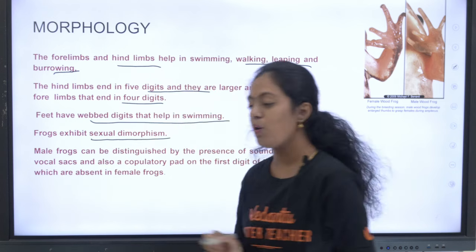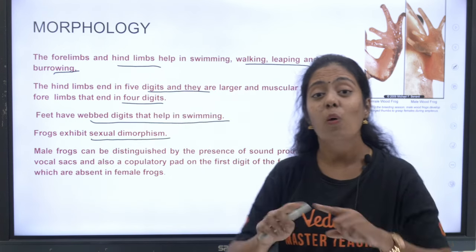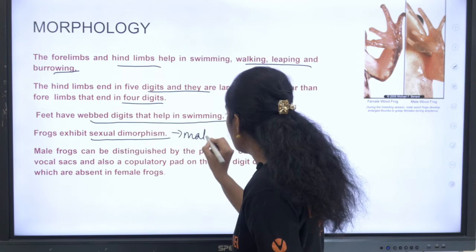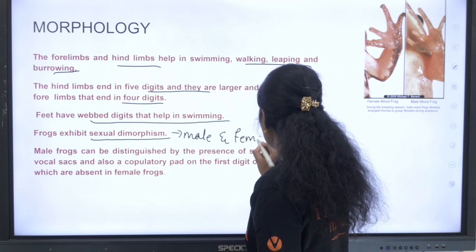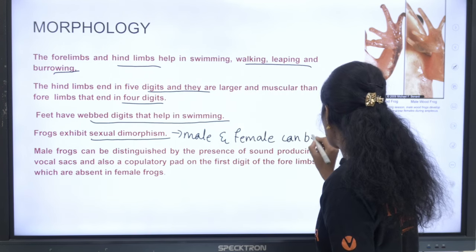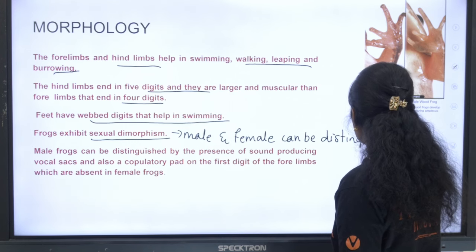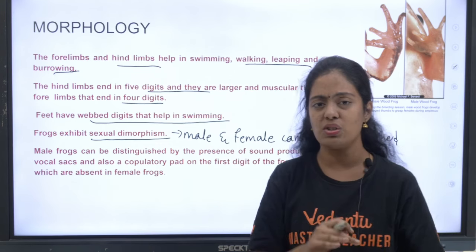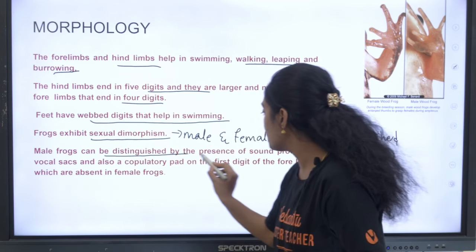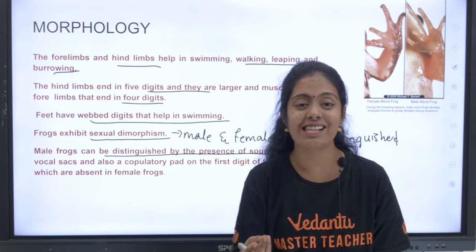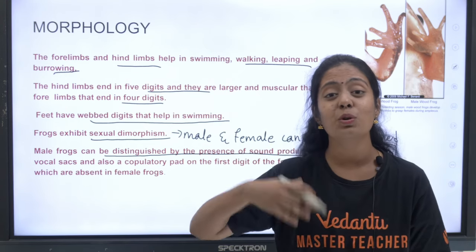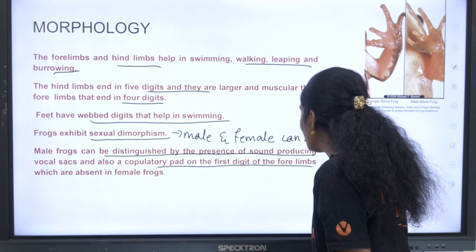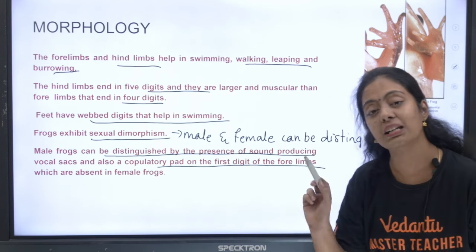Frogs exhibit sexual dimorphism — males and females can be distinguished. Male frogs can be distinguished by the presence of sound-producing vocal sacs. They also have a copulatory pad on the first digit of the forelimb, which is absent in female frogs.